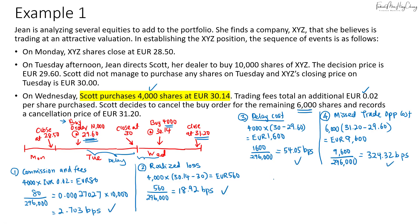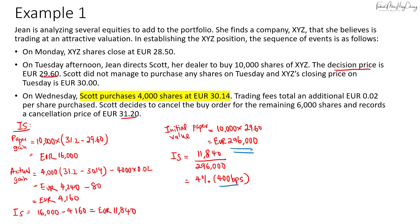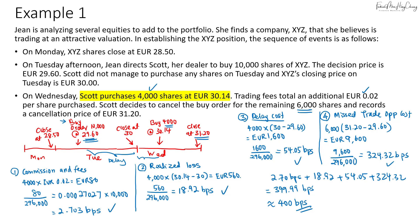Adding all the basis points together: 2.70 plus 18.92 plus 54.05 plus 324.32 equals approximately 399.99 basis points, which rounds to 400 basis points — exactly equal to the implementation shortfall calculated previously. That covers the first scenario. Next, we will move to the second scenario to see what happens if we had bought the 4,000 shares on the very first day we placed the order.